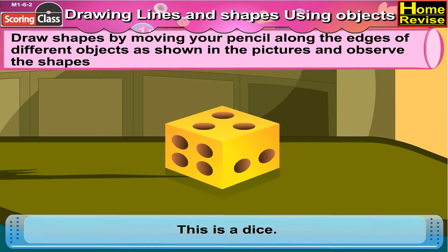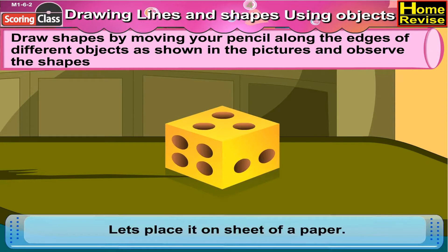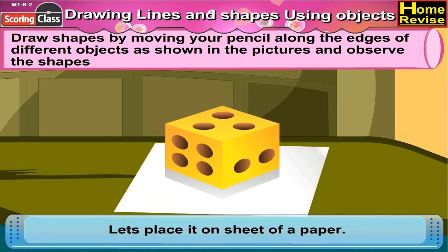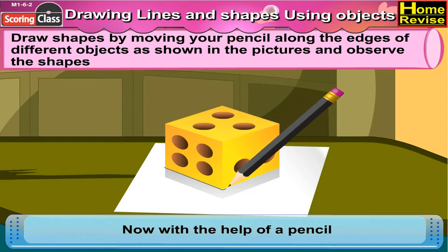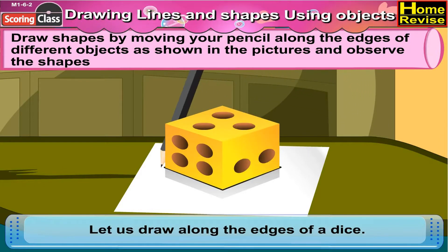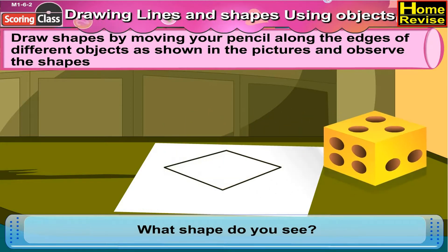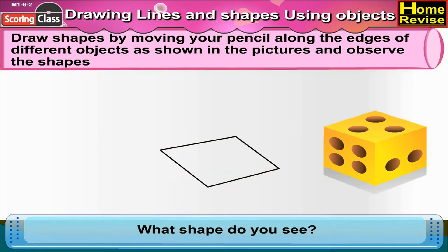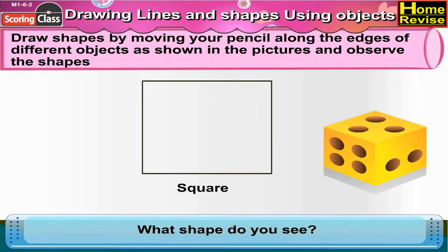This is a dice. Let's place it on a sheet of paper. Now with the help of a pencil, let us draw along the edges of the dice. What shape do you see? That's a square.